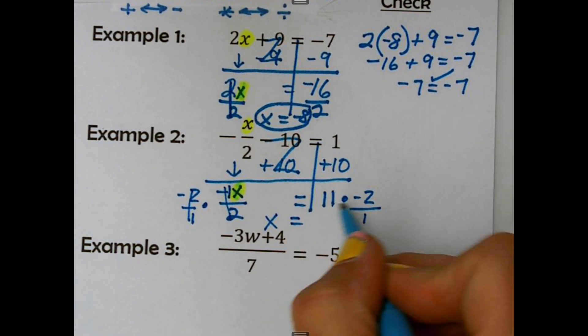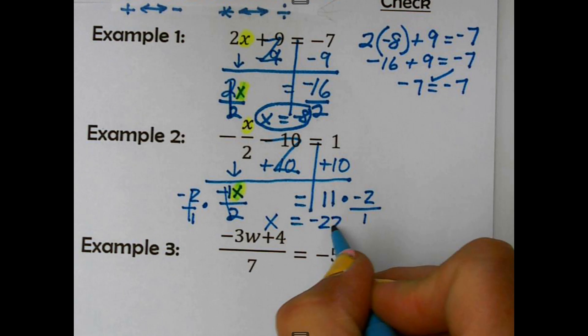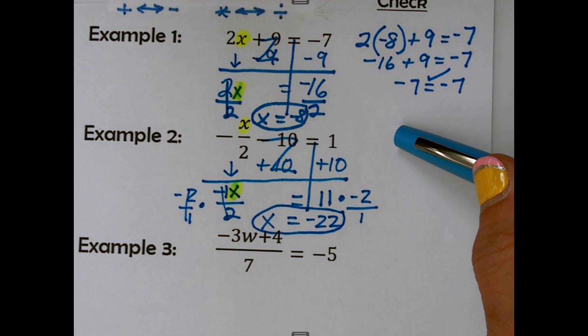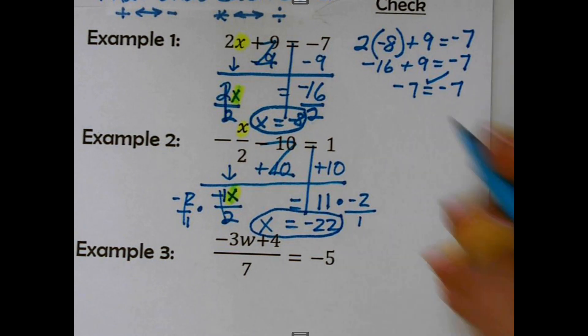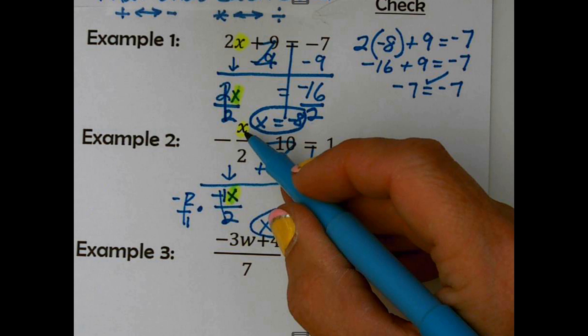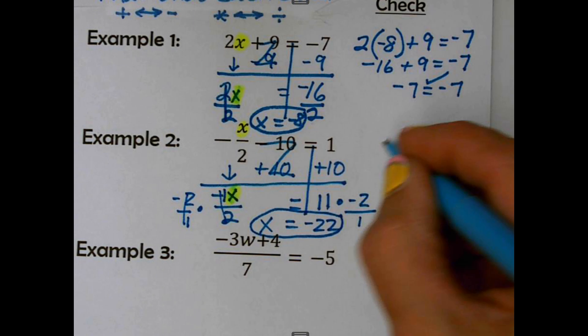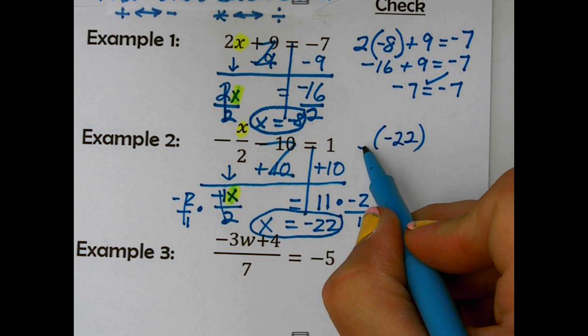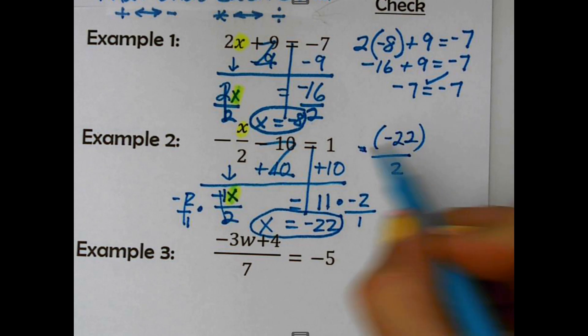I'm going to substitute it back in. That's our check. You can see I had the word check up there. Anywhere I see that variable, I'm putting in negative 22. Now look, there's a negative in front of it and a 2 underneath. Get that negative there. And subtract 10, that equals 1. That's the original equation there.